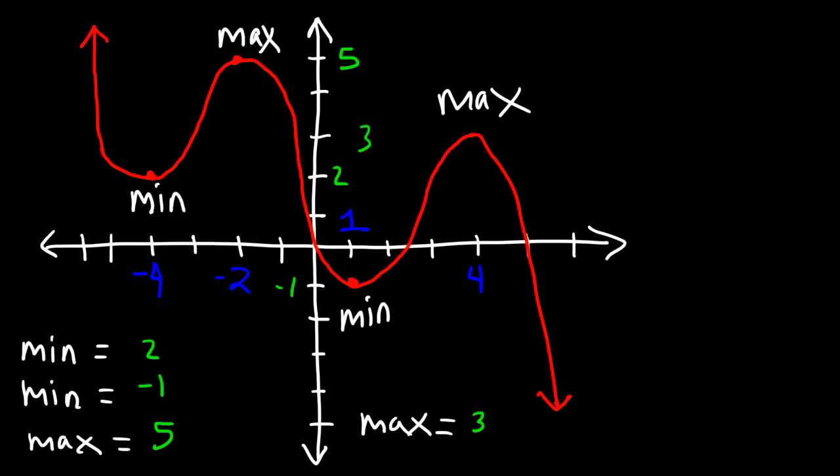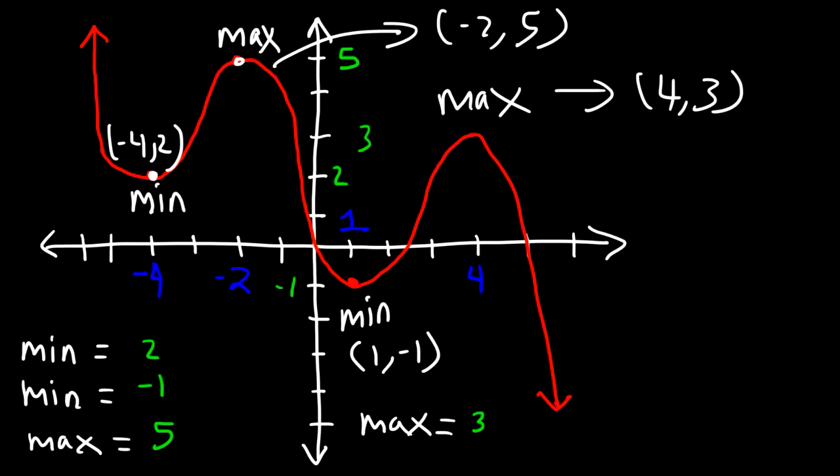Now sometimes, depending on what type of problem you're working on, the problem may ask for the entire coordinate of each of these relative maximums and minimums. So for this one, you could say it's located at negative 4 comma 2. And then this maximum has the point, let's put it here, negative 2 comma 5. And for this one, it's 4, 3. And for this minimum, it's 1, negative 1. So you can actually write the entire point if you want to.